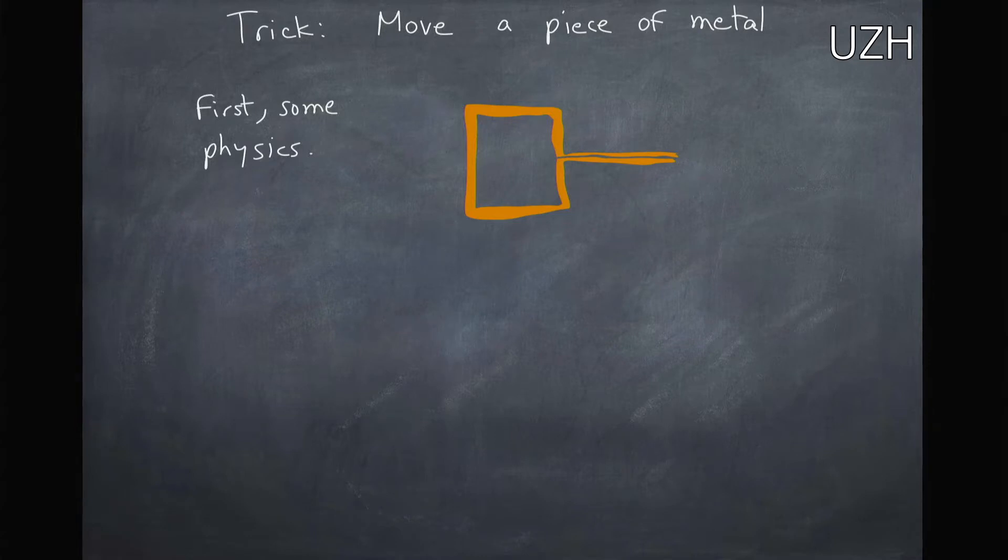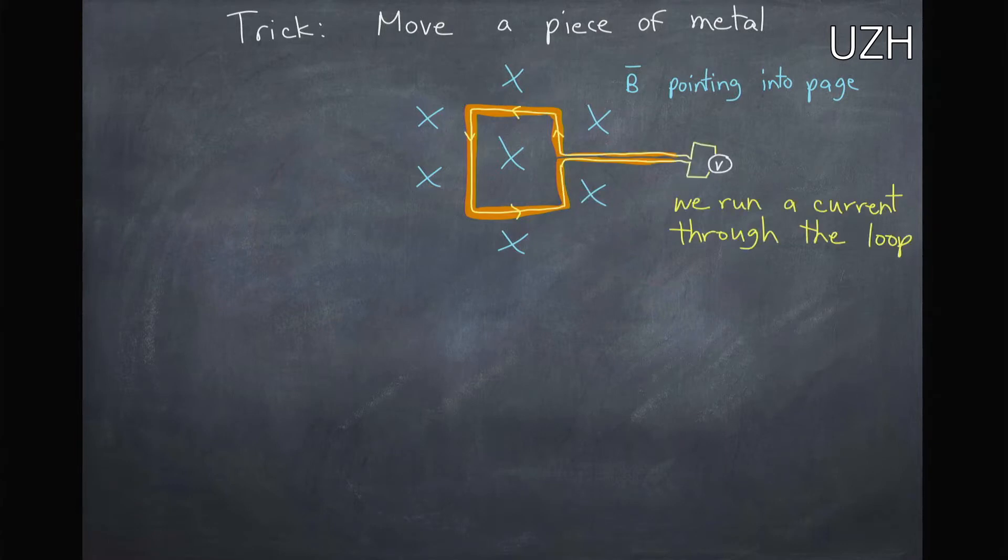And first we need some physics. So here I have a loop. And if I put this loop in a magnetic field, so here the magnetic field is pointing into the board here. And now what I can do is run an electric current through this loop.